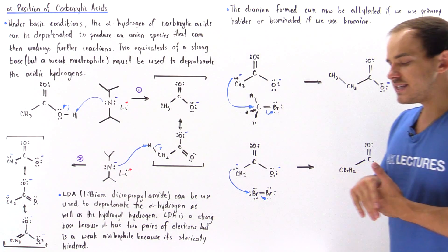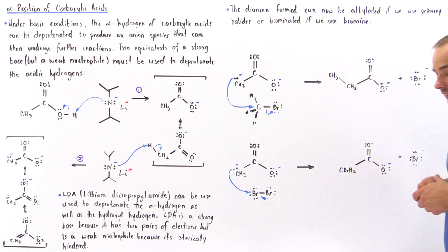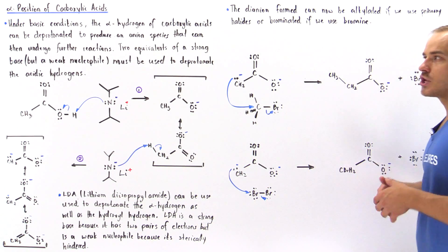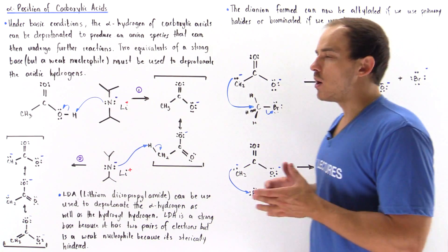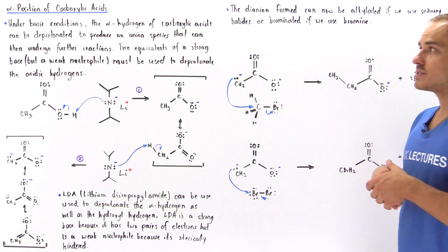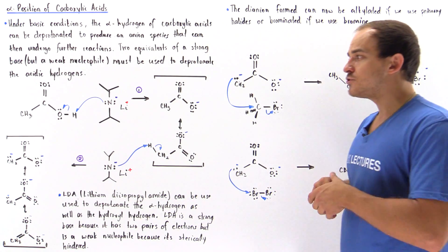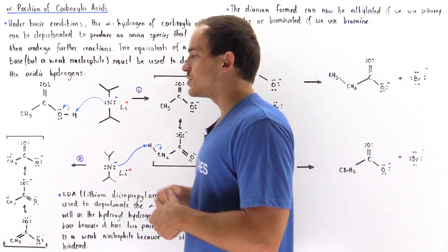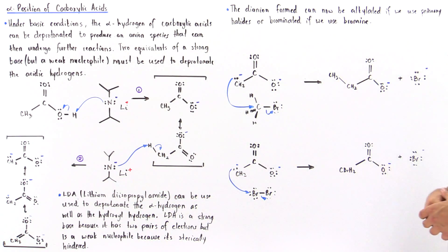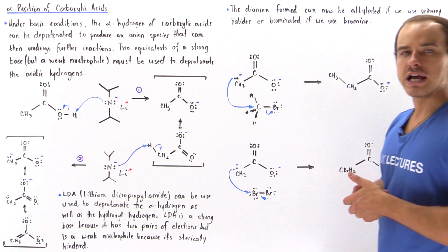So we see that because the carboxylic acid contains the carbonyl group, it undergoes similar reactions that carbonyl groups undergo. In this case, we examined how the carboxylic acid contains alpha hydrogens that, under certain conditions, can be deprotonated, and that the anion can undergo two different types of reactions as shown.